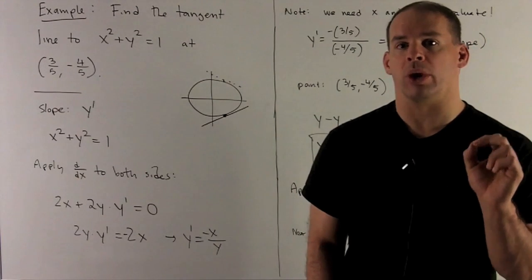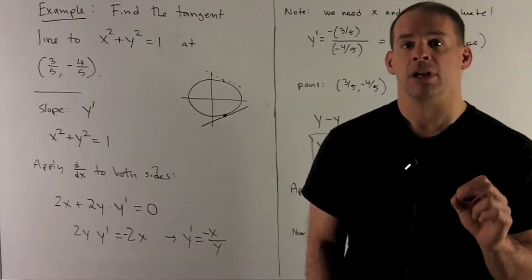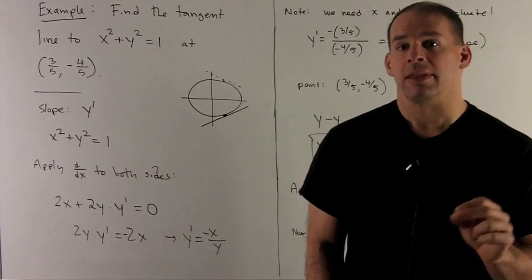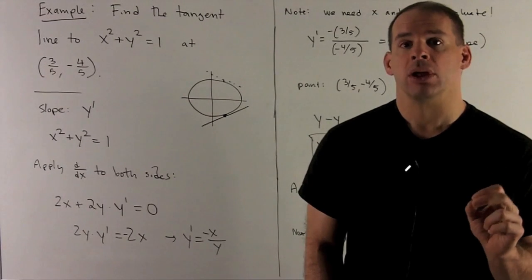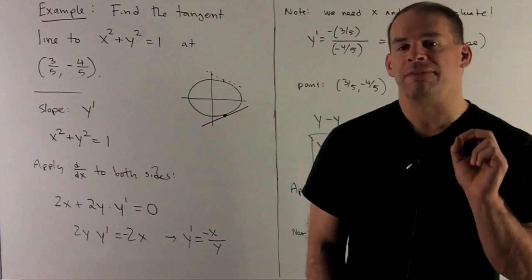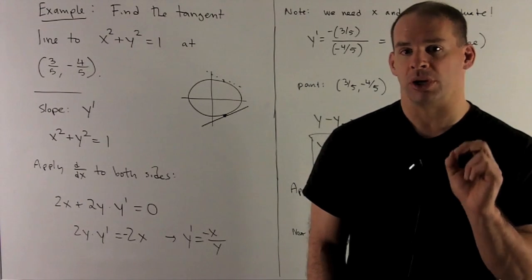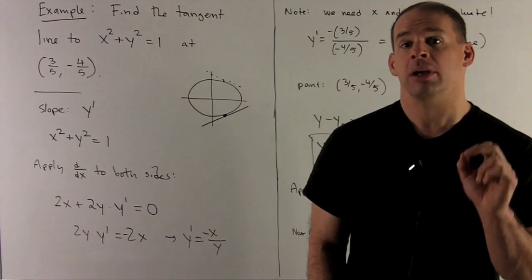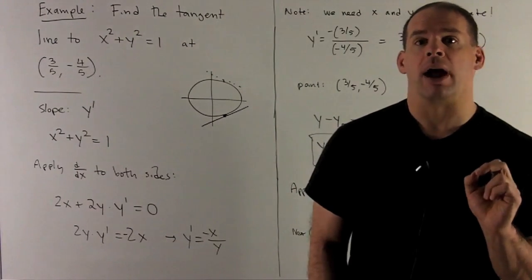Let's proceed. I want a tangent line so I'll need a slope and a point. We're given the point, so I just need the slope. That's going to be given by y'. We don't have a function of x here, so we're going to use our implicit differentiation procedure to get y'.